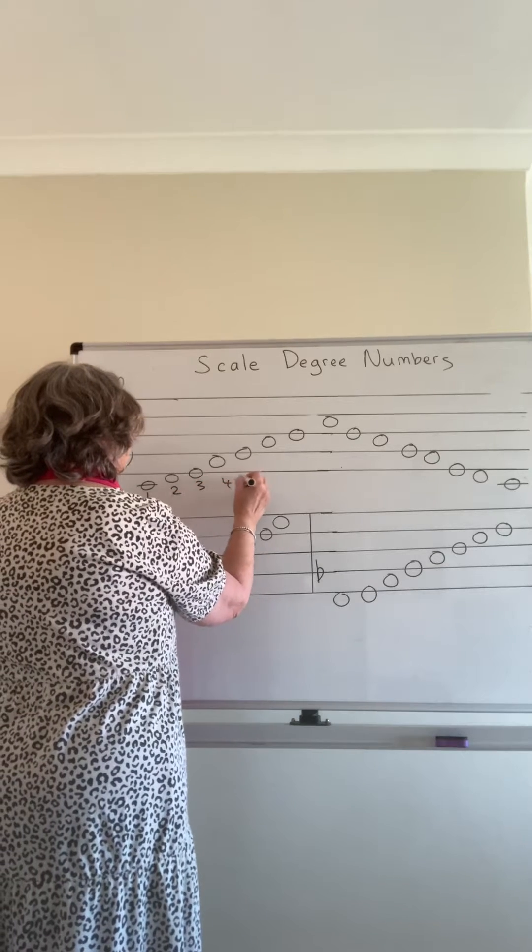Another common question is to mark semitones with a slur or to mark tones with a slur. So we know from before: tone, tone, semitone, tone, tone, tone, semitone. It's good to just memorize these numbers — semitones are at three-four and seven-eight.